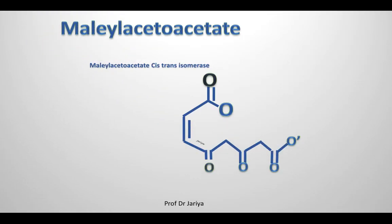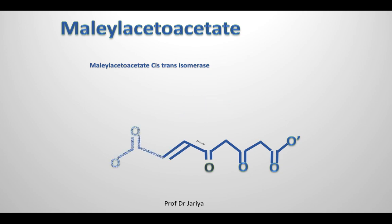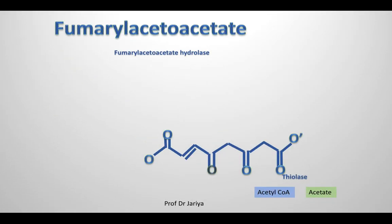Maleylacetoacetate normally, in the presence of isomerase, is isomerized into fumarylacetoacetate. Fumarylacetoacetate hydrolase cleaves it into fumarate and acetoacetate. Acetoacetate in the presence of thiolase forms acetyl-CoA and acetate. In alkaptonuria, there is a block at the conversion of homogentisate to maleylacetoacetate, so acetyl-CoA and fumarate will not form and homogentisate will accumulate in body tissues.